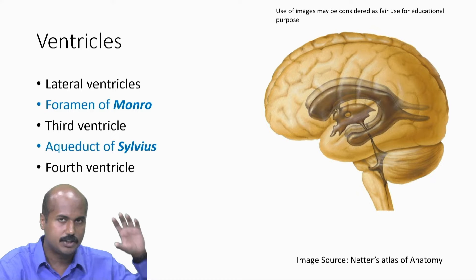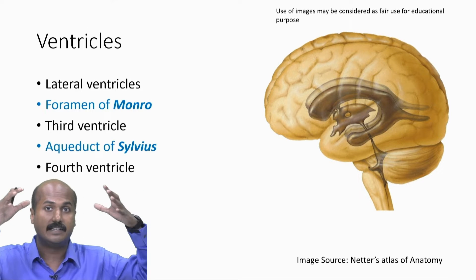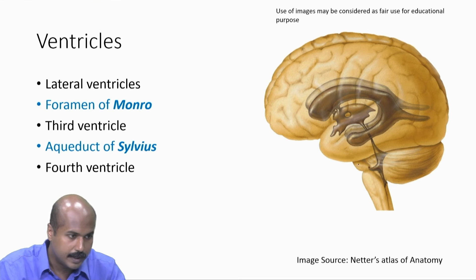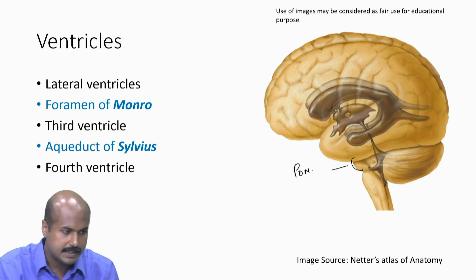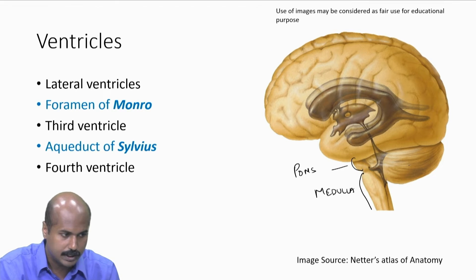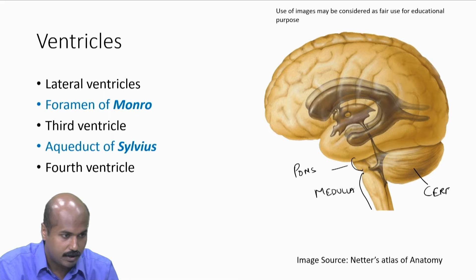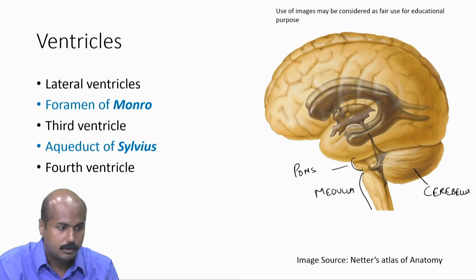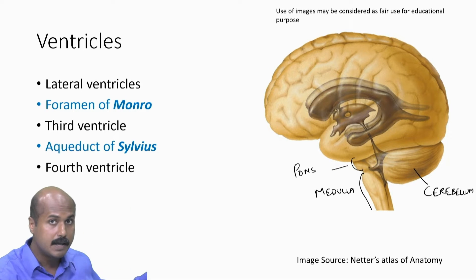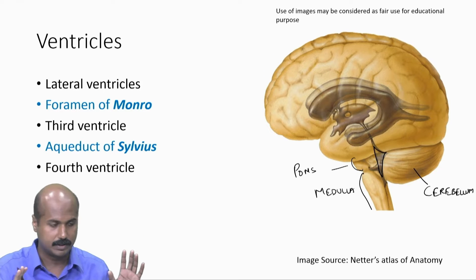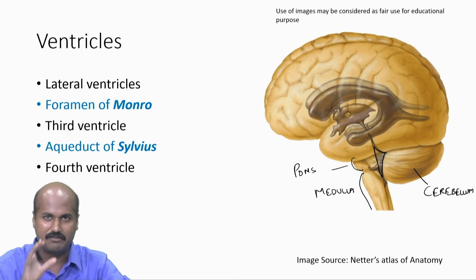The lateral ventricle is in the cerebral hemisphere, the third ventricle is in the diencephalon. The fourth ventricle is located behind the lower part of the brainstem — behind the pons and the medulla — and in front of the cerebellum. The location of the fourth ventricle and its relations with different parts of the brain are very important.